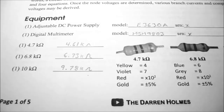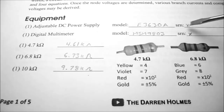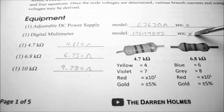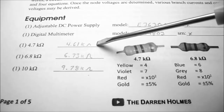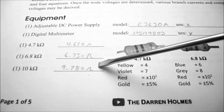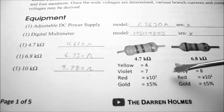Under equipment, the adjustable DC power supply is going to be the Agilent model E3630A, and the digital multimeter is going to be the Mastech MSM9803. I've gone ahead and checked the resistance of my resistors: the 4.7K is actually 4.61K ohms, the 6.8K ohm resistor is 6.73K ohms, and the 10K ohm resistor is 9.78K ohms. I've also obtained a graphic with color codes so you don't confuse your resistors.